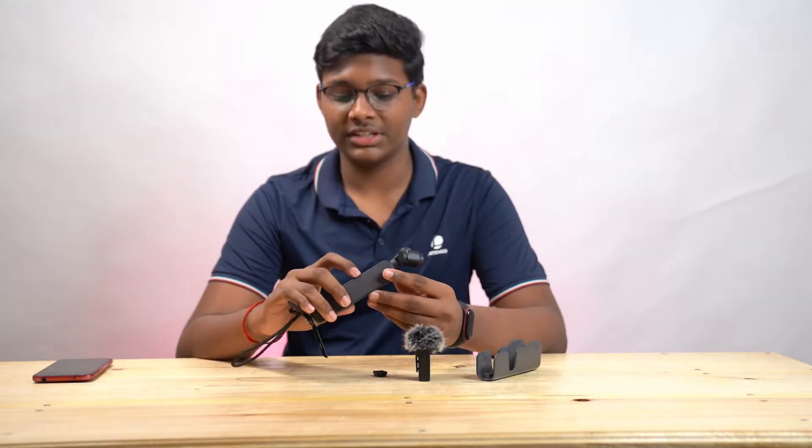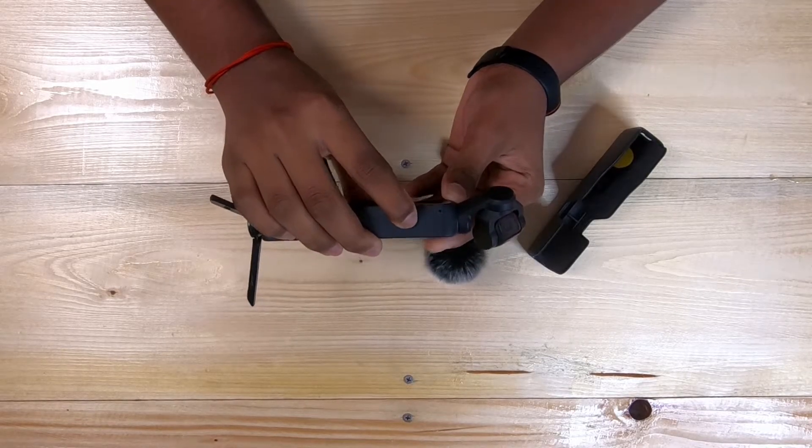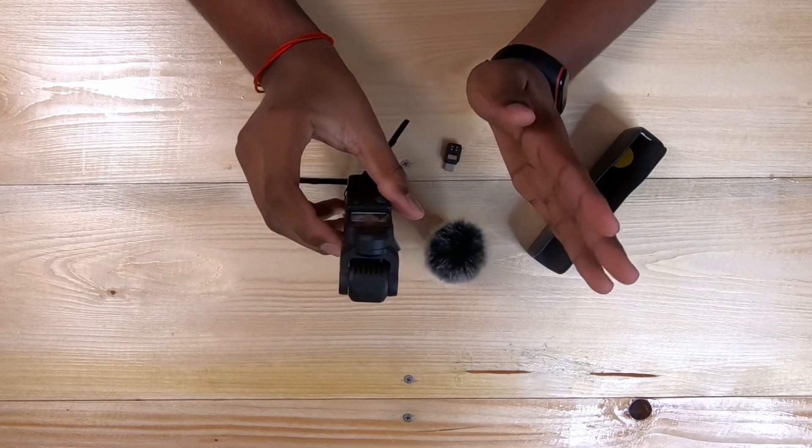First of all, to turn on the DJI Pocket 2, you see this button over here. You have to be clicking it. And then, it turns on. That's as simple.